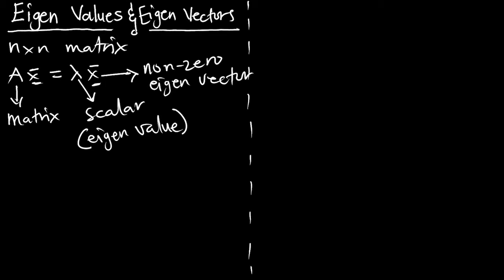Our aim is to find the eigenvalue lambda and also find the eigenvector X. This expression means that if we have a matrix A being multiplied by the eigenvector, it is equal to the eigenvalue multiplying the eigenvector. So let's verify and see if this expression is really true.